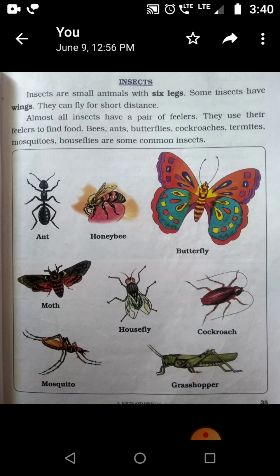Insects. Ab hum insects ke baare mein padhne wale hai. Insects are small animals with six legs. Some insects have wings and they can fly for a short distance. Jo insects hai, woh sabse small animal mein ginti hote hai. Unko six legs, yani chhe pair hote hai. Aur kuch insects ko pankh bhi hote hai, toh woh thode-thode distance mein udke yahan se wahan jate hai.